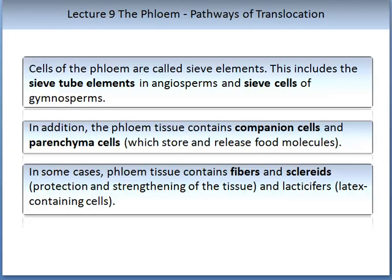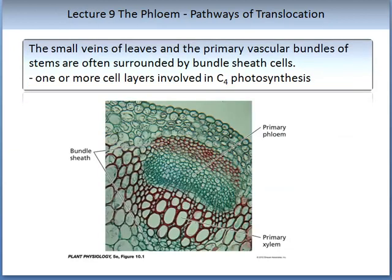Fibres and scleroids protect and strengthen the tissue. There are also laticifers, which are latex-containing cells. The small veins of leaves and the primary vascular bundles of stems are often surrounded by bundle sheath cells, as can be seen in figure 10.1 from the recommended text. One or more cell layers are involved in C4 photosynthesis.